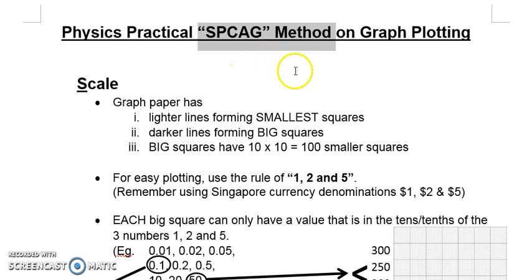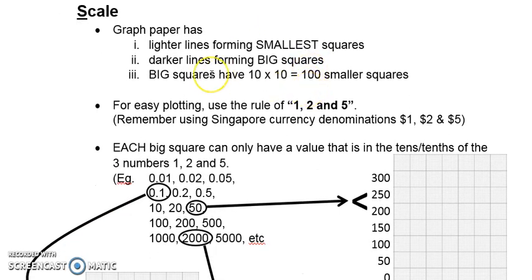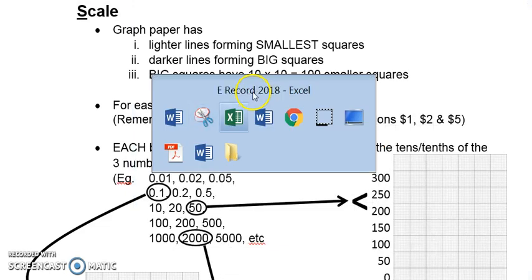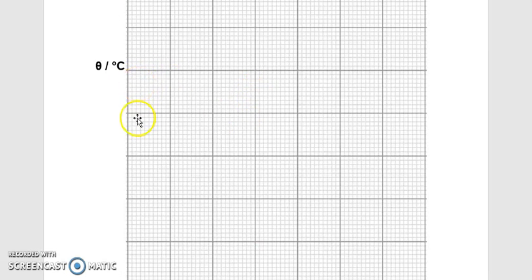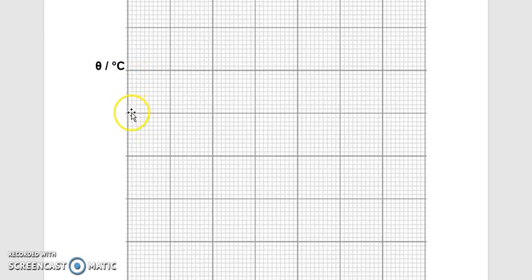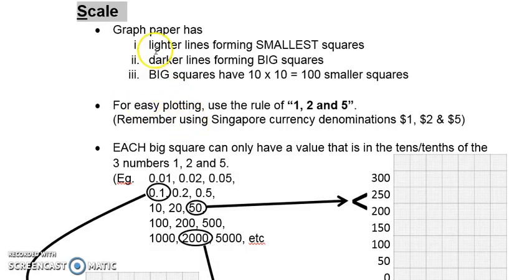So the S in the SPCAG method stands for Scale. What do I mean by scale? A graph paper basically has lighter lines and darker lines. The lighter lines form the smaller squares, whereas the darker lines form the bigger squares. Each big square has about 10 by 10 small squares inside, so the big squares have about 100 smaller squares.